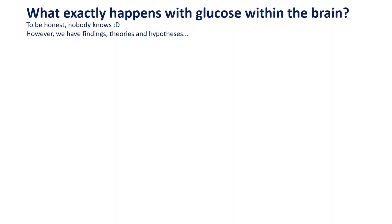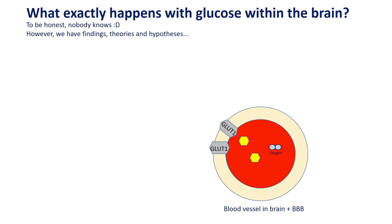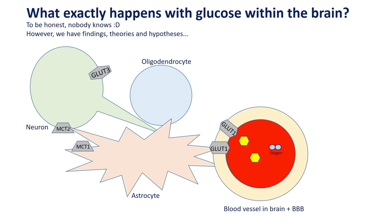As you have heard in previous episodes of this channel, there are many different cells within the human brain. For our metabolic story here, we can simplify it to just neurons, astrocytes, and oligodendrocytes. The difficult issue for metabolic research is that they are very close to each other, making it impossible to extract just neurons or just astrocytes from a given region.